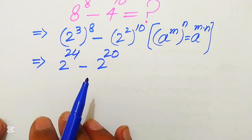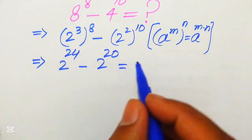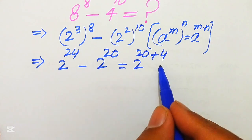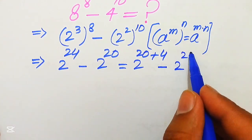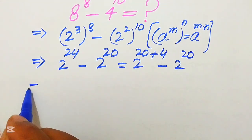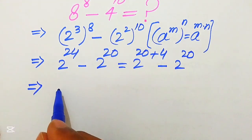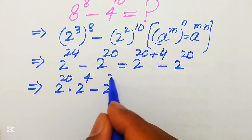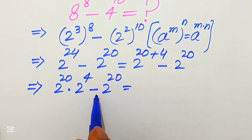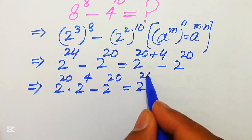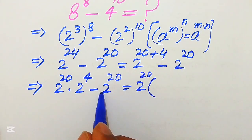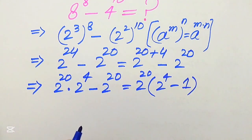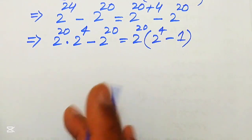Now we break the exponent 24 and write it as 20 plus 4, so we have 2 to the power of (20 + 4) minus 2 to the power of 20. We can see that 2 to the power of 20 is the common term. Taking it out as a common factor, the remaining values give us 2 to the power of 20 times (2 to the power of 4 minus 1).